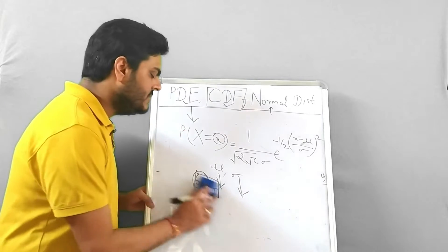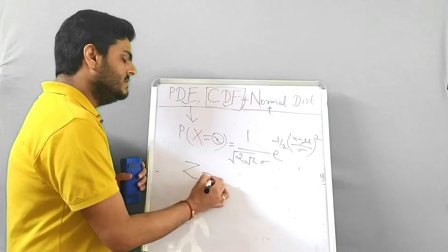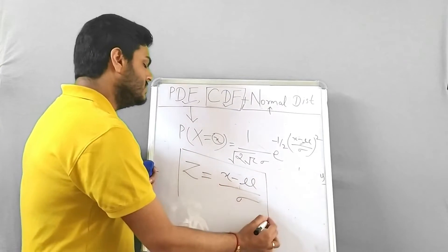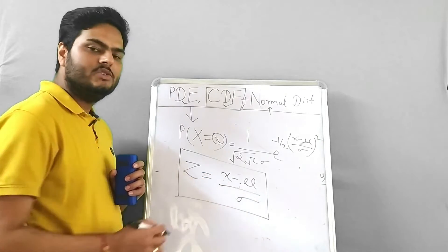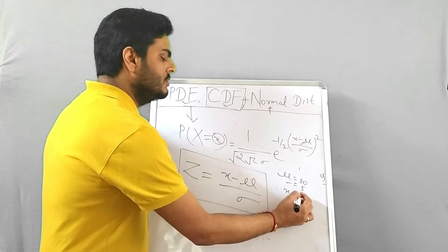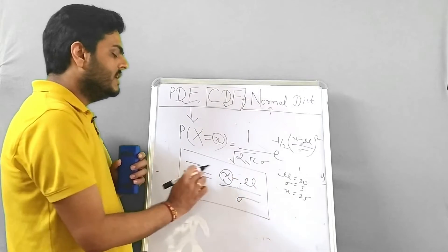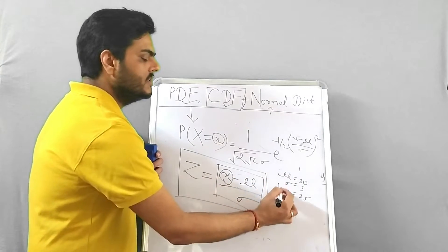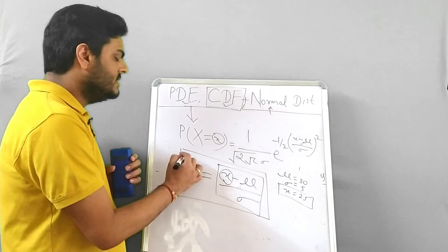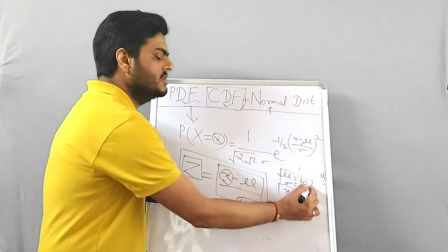To understand this in a simplified way, let me introduce the Z-score. The Z-score is defined as (x − μ) / σ. Here, x is your value, μ is the mean, and σ is the standard deviation. For example, if μ = 30, σ = 5, and x = 25, you plug those values in and get the Z-score for this x in this distribution. If the result is, say, 1.25, then 1.25 is the Z-score for x = 25 in that distribution.